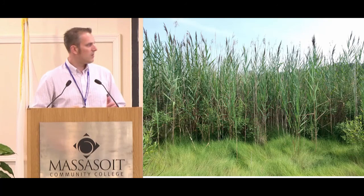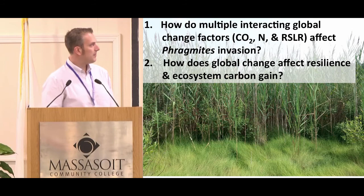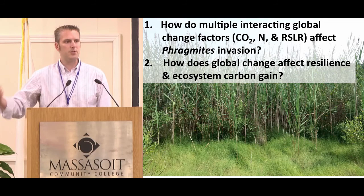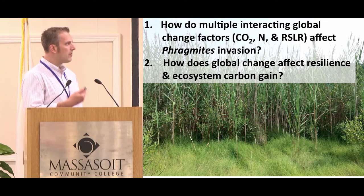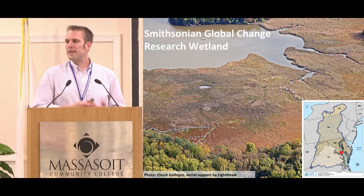The question is: when we replace short grass communities — Spartina-dominated marshes — with this tall-stature Phragmites community, what's going to happen? For the remaining time I want to address how multiple interacting global change factors — CO2, nitrogen, and relative sea level rise — affect Phragmites invasion, how they affect resilience, and ecosystem carbon gain.